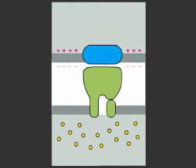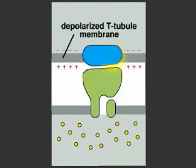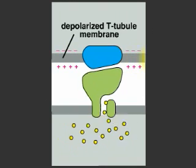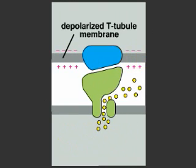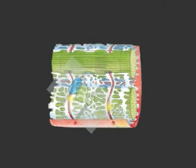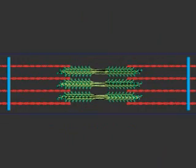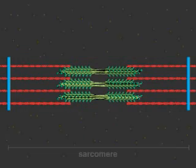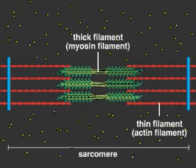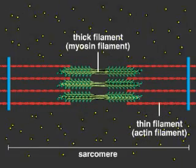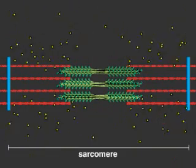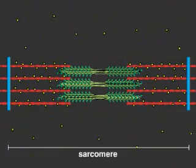The sarcoplasmic reticulum is the major calcium store in muscle cells, and it releases a burst of calcium ions all throughout the cytosol of the cell. Within a contractile bundle of a muscle cell, called a myofibril, the calcium interacts with protein filaments to trigger contraction.